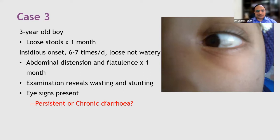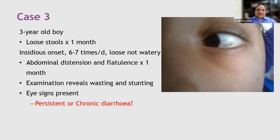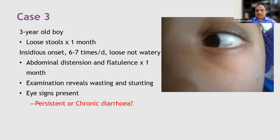Most participants gave the right answer — this is chronic diarrhea, not persistent diarrhea. First, persistent diarrhea is a disease of children less than two years of age; this child is three. The most important point favoring persistent diarrhea is acute onset — the mother can identify the exact date. Persistent diarrhea starts as an acute episode that continues beyond two weeks, whereas chronic diarrhea has a more insidious onset with stools that are not watery.